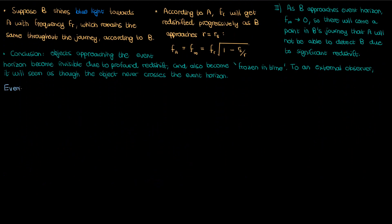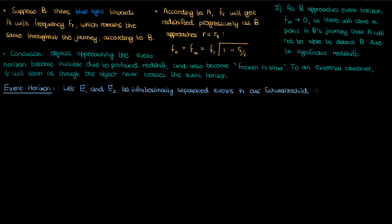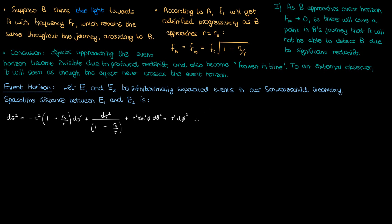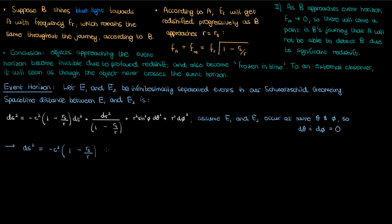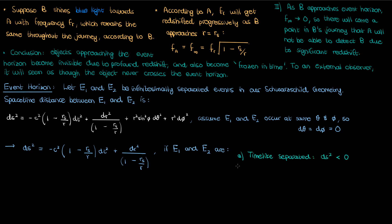Now here's another question you might have: why do we call it the event horizon? Let's assume that we now have two events E1 and E2 that are infinitesimally separated in our Schwarzschild geometry. The spacetime separation or distance between these two events is given by our ds squared from equation 1. To simplify things let's assume that E1 and E2 occur at the same value of theta and phi, so there's only a time separation and a radial separation. Now let's recall some facts from special relativity: if E1 and E2 are timelike separated then ds squared is negative; if we're outside the event horizon this implies that the time separation term, the dt term, overpowers the spatial separation term.